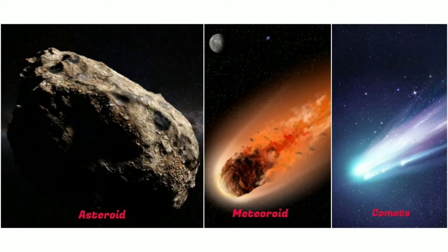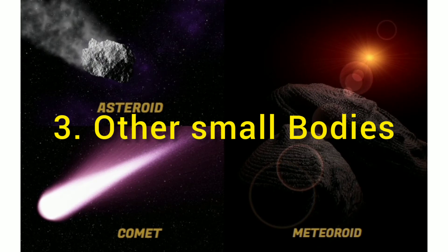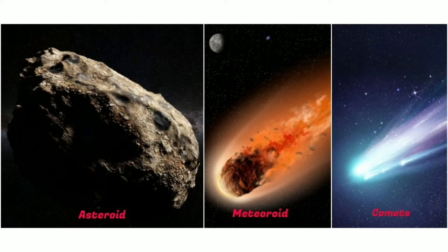The third major component is other kinds of small bodies revolving around the sun. They are asteroids, meteoroids and comets.